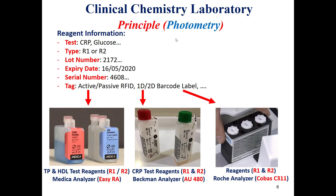Each reagent or analyte has a specific reagent with specific information. What information does the analyzer need to know about this reagent? Firstly, what is the type of test or analyte being tested — for example glucose, CRP, uric acid, and so on. We have two types of reagents, reagent 1 and reagent 2, and most analytes need two reagents. We should know whether it is R1 or R2 to preserve the sequence in adding the reagent with the analyte. We also need to know the lot number.